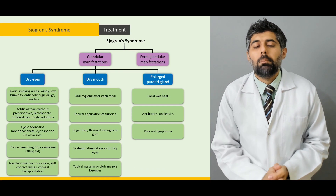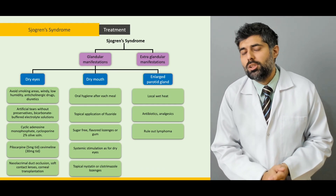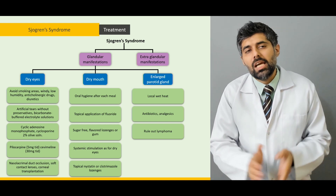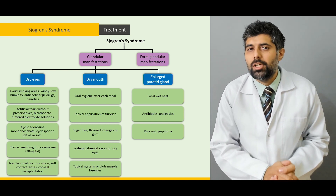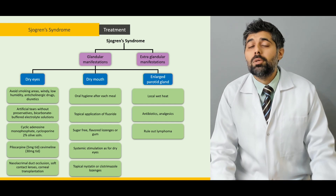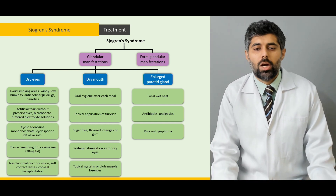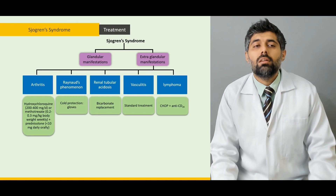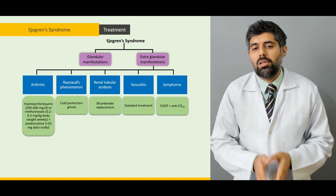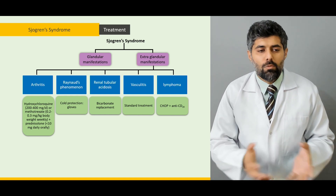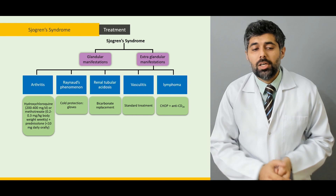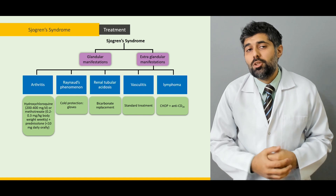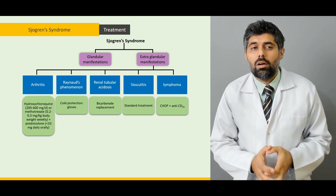Then we're going to learn about the treatment of the Chagrin Syndrome — both the glandular manifestations and the extra-glandular manifestations treatments, which treatment options we use in dry eyes, which in dry mouth, and which in the parotid glands. Then lastly, the extra-glandular manifestations: which treatments to give in arthritis and the other ones, why these treatments are chosen and why they are the treatments of choice.